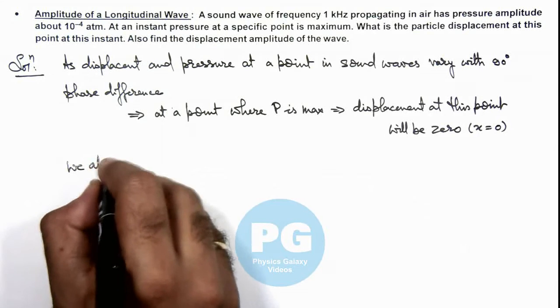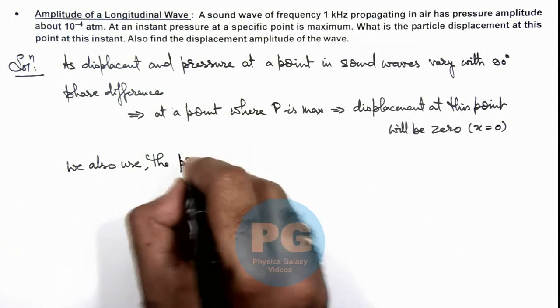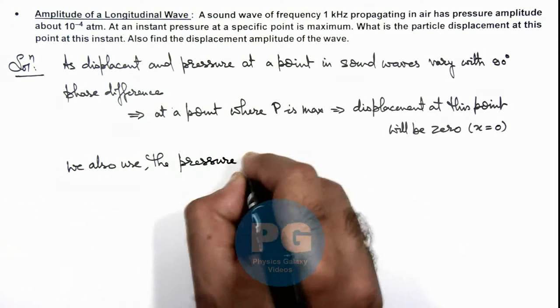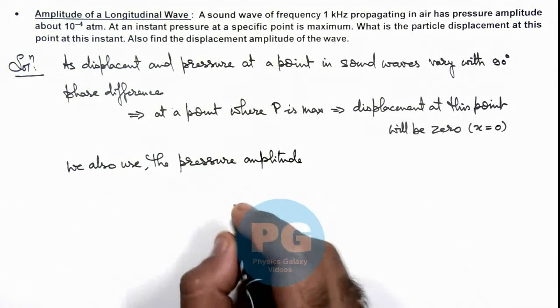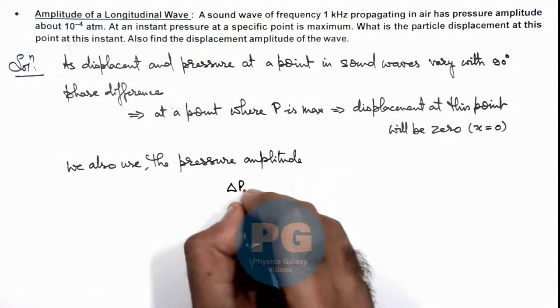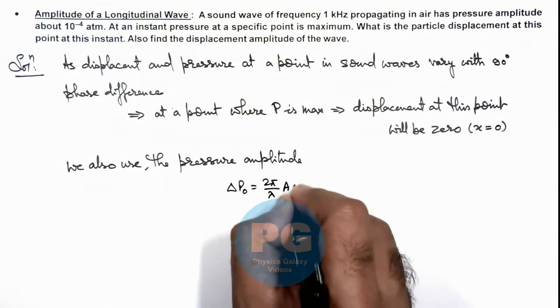And we also use the pressure amplitude, which can be given as Δp₀ equals 2π/λ multiplied by A·B.